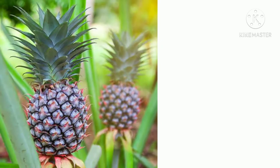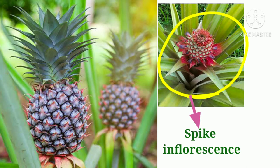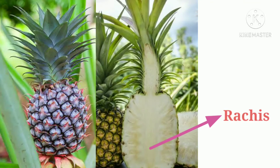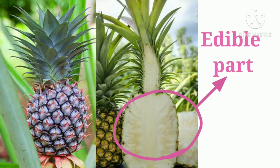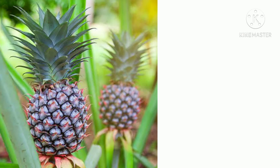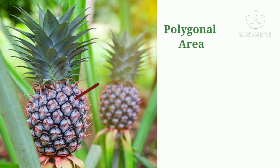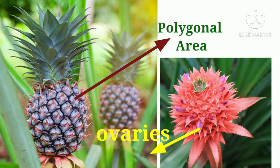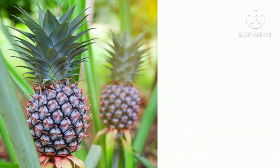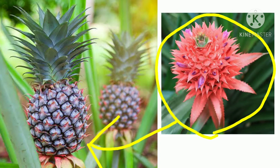Pineapple is also considered a sorosis fruit because its spike inflorescence converts into a false fruit. Here the rachis, perianth, and bracts become fleshy and succulent, forming the edible part. The apex contains a crown of sterile leafy bracts, and the surface of the fruit shows polygonal areas which are the united ovaries of the component flowers. This is also a sorosis type false fruit.